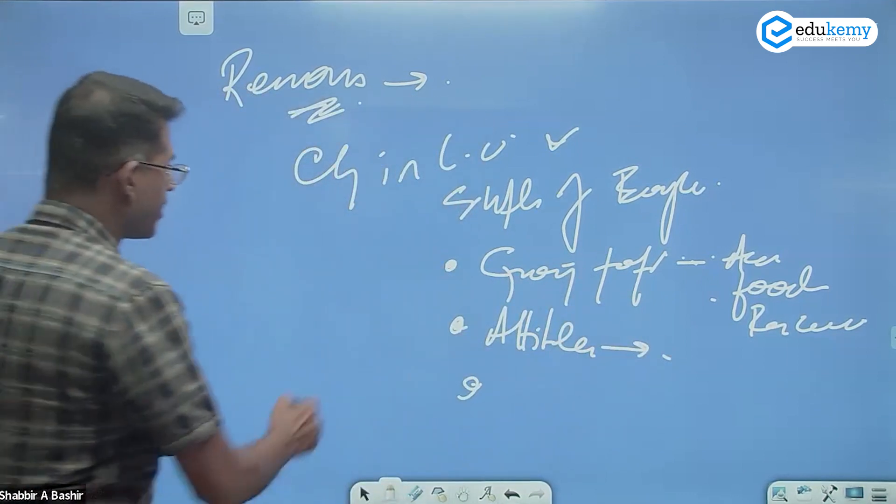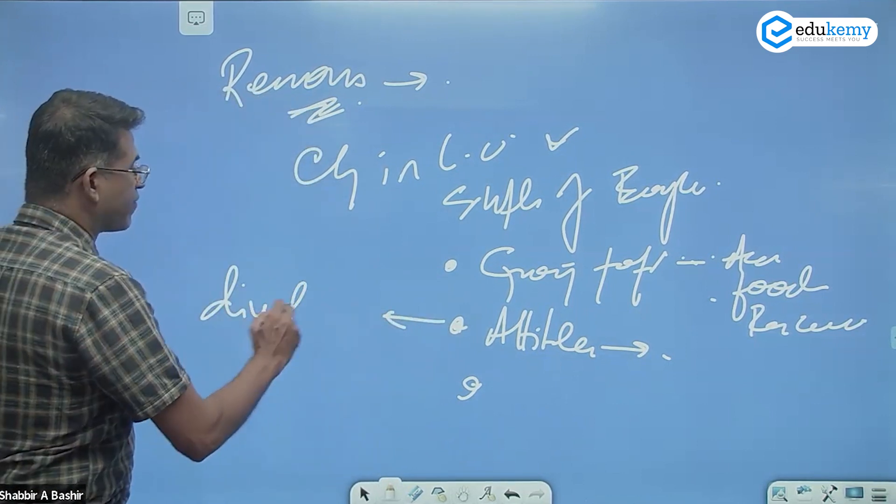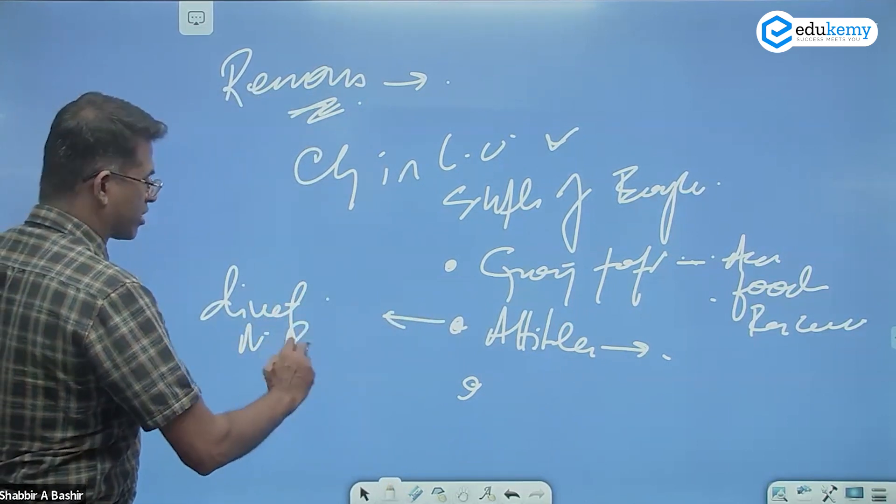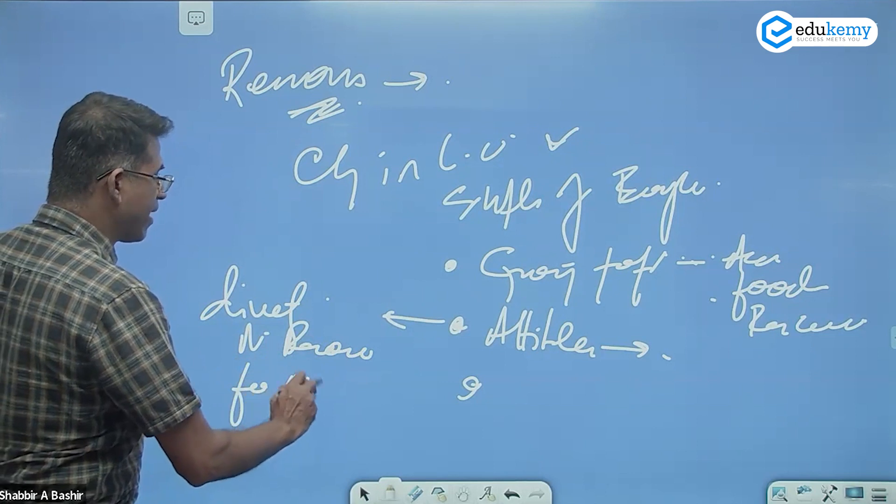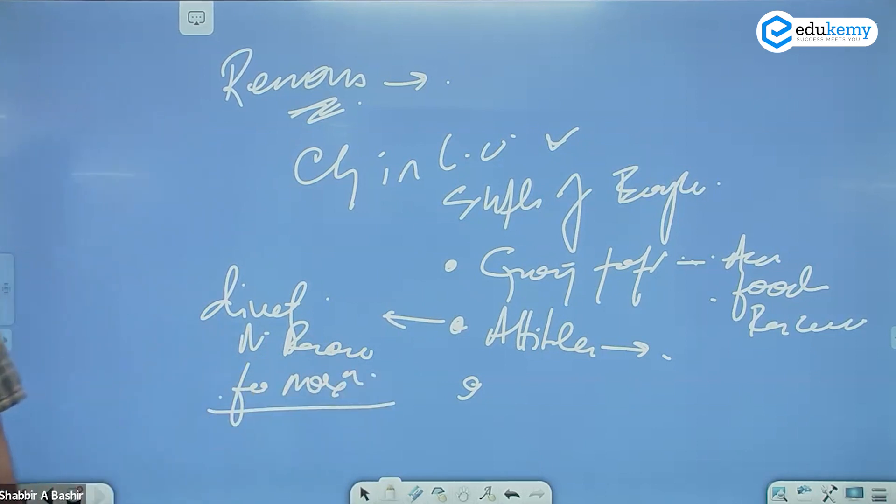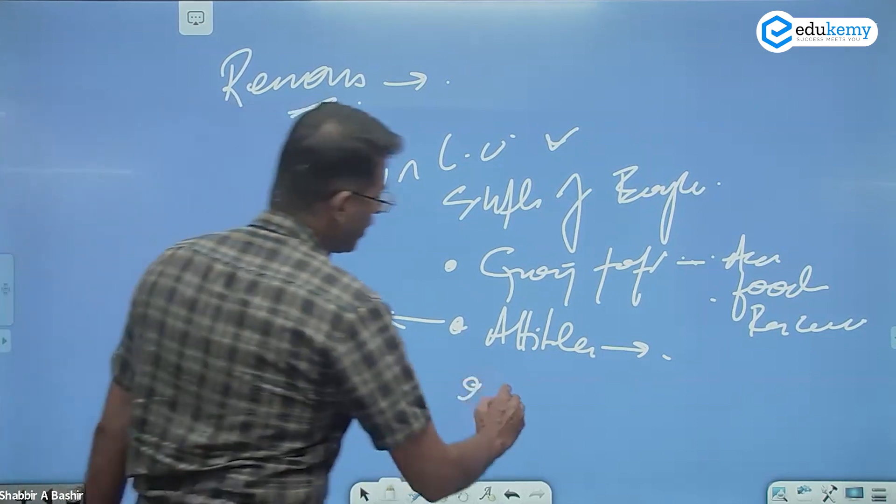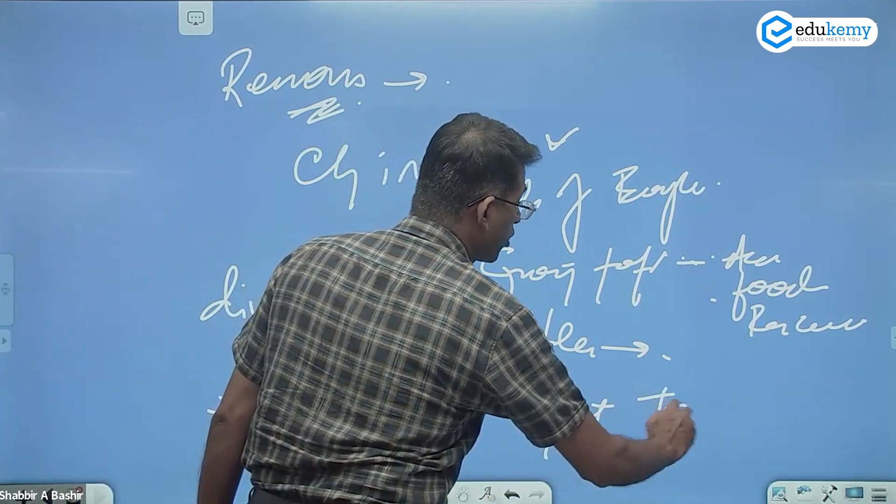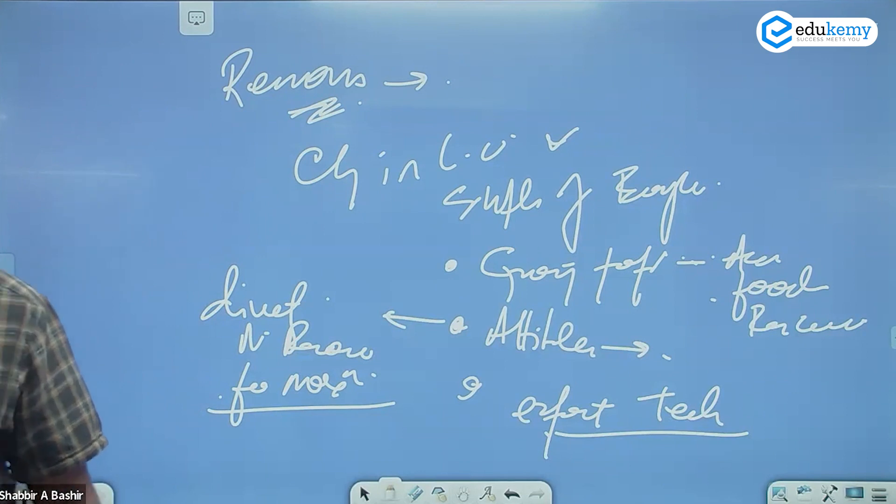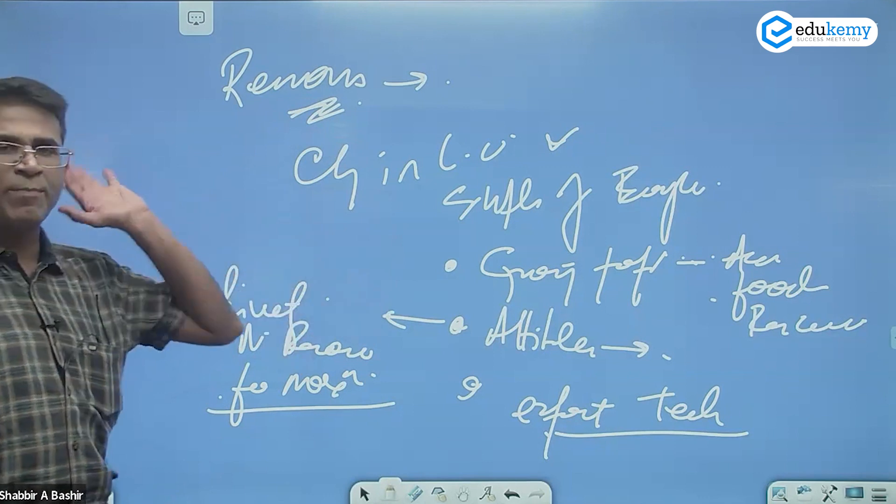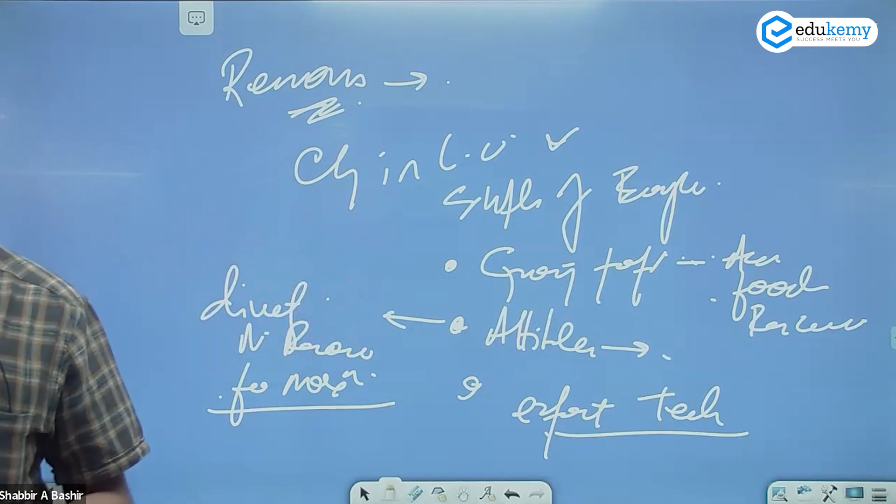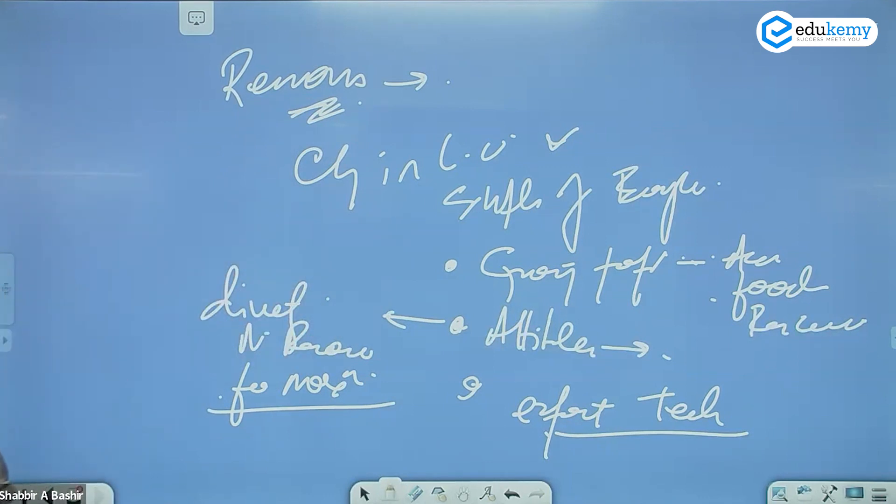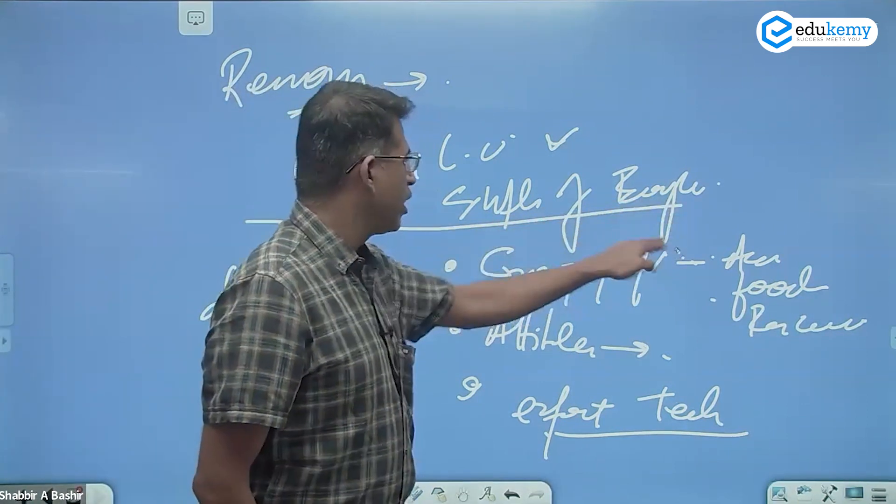The second reason is related to attitudes - attitudes where man conquers nature, attitudes related to diverting natural resources for maximization of human comfort. The third will be the exponential development of technology. If technology was less, maybe the changes would have been lesser.